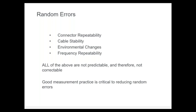There are other errors that we cannot simply correct for — things we'll have to control through the environment and cable stability. We want to use good test port cables — that's definitely important. Connector repeatability, because we're always connecting and disconnecting things. All of these are not predictable and therefore we cannot fully correct for them. This is where good measurement practice comes in: using good techniques to reduce these random errors as much as possible.